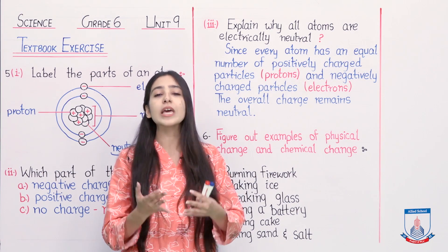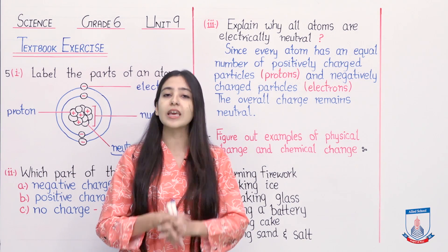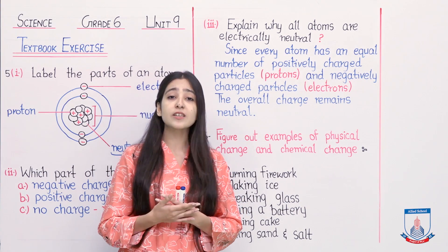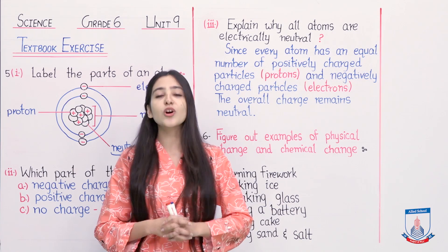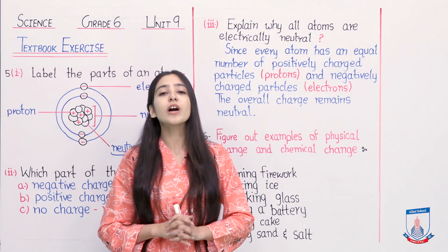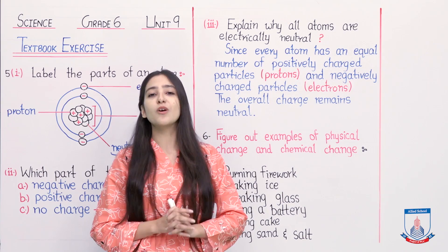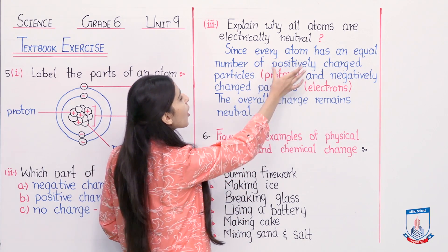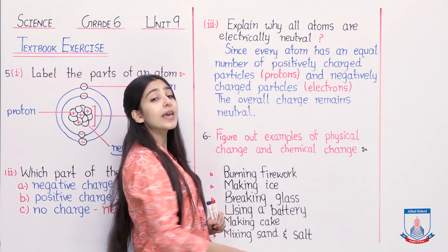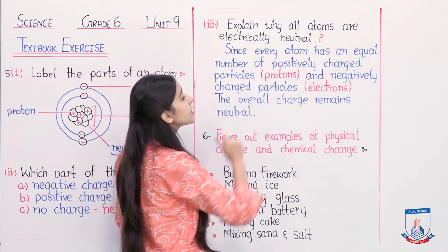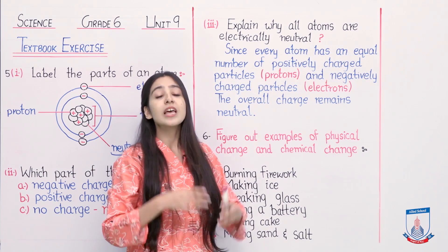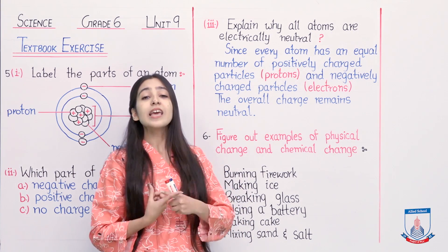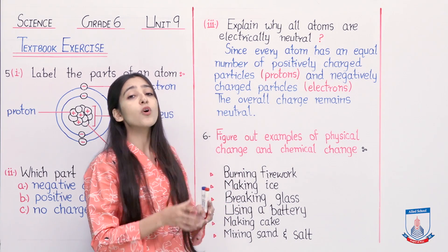The number of protons is equal to the number of electrons. When both oppositely charged particles are equal to each other, they will cancel out the effect of each other. Since they cancel out the effect of positivity and negativity, the overall charge on our atom will be neutral - meaning it will have no charge. That is why it has an equal number of positively charged particles called protons and negatively charged particles called electrons, and since both charges are equal, the overall charge remains neutral.